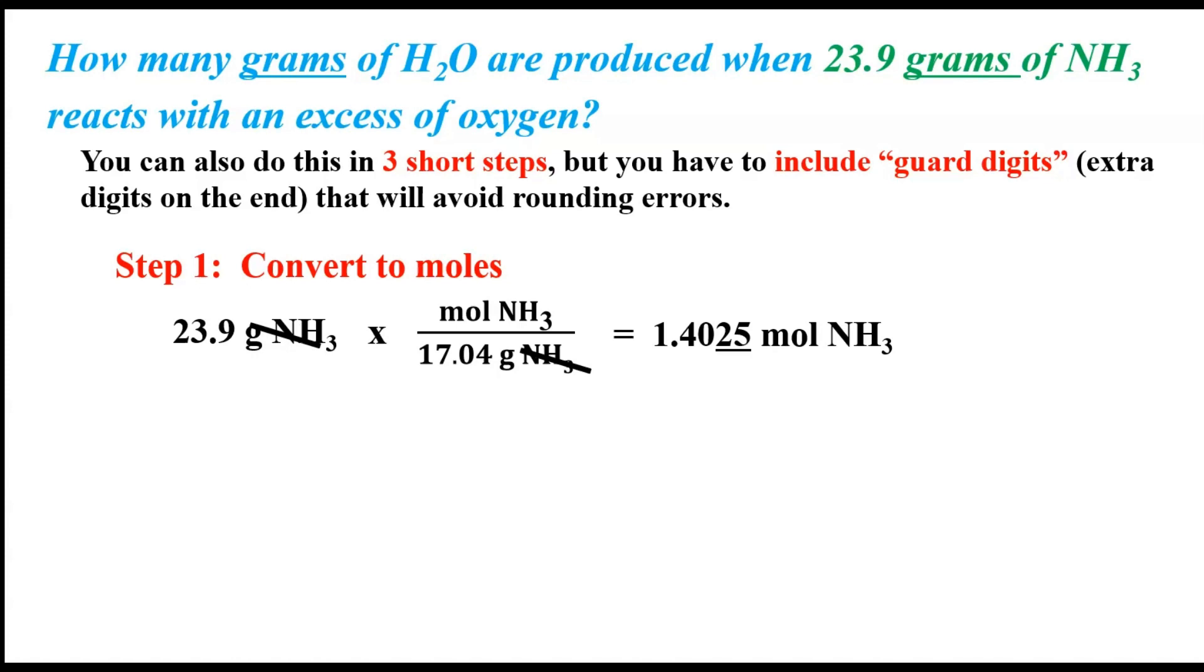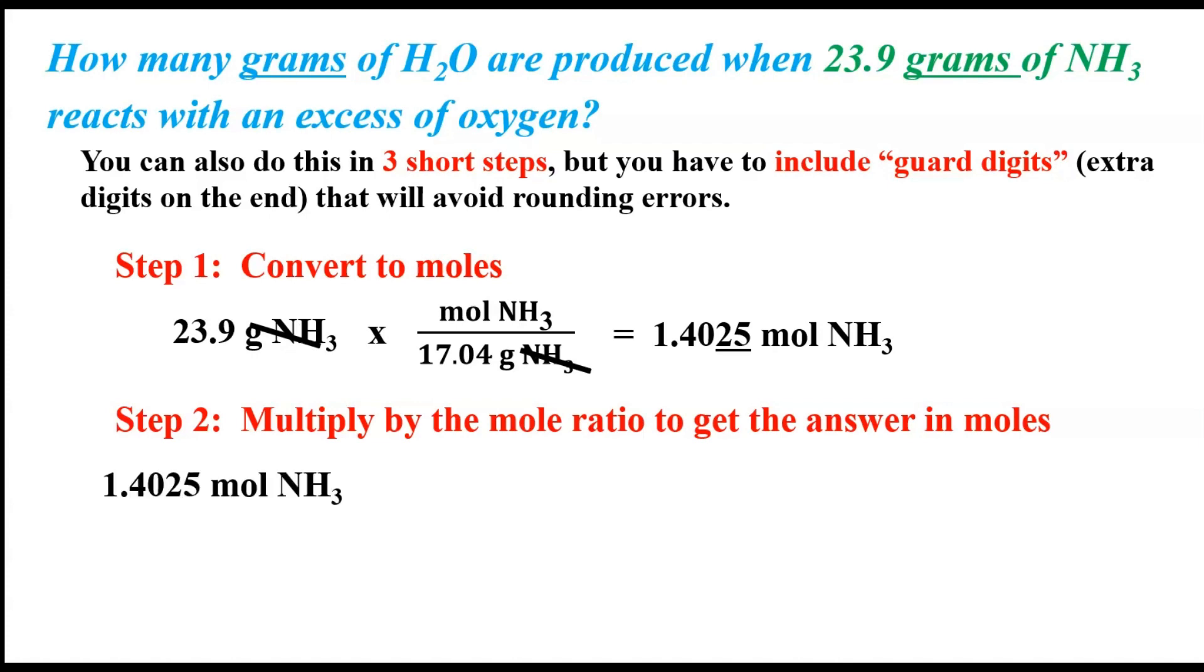The second step, predictably enough, is to multiply by the mole ratio to get the answer in moles. So this is just like any other stoichiometry problem. You take the previous value that we just calculated, and then line up the values so that the moles of NH3 will cancel out, and we multiply across the top, divide by four, and we end up with, in this case, 2.1038. We leave the guard digits on again.